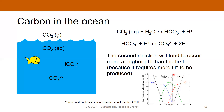Surface ocean pH is slightly above eight, and so at least for the surface ocean, bicarbonate outnumbers carbonate by roughly a factor of 10 — almost an entire log cycle.